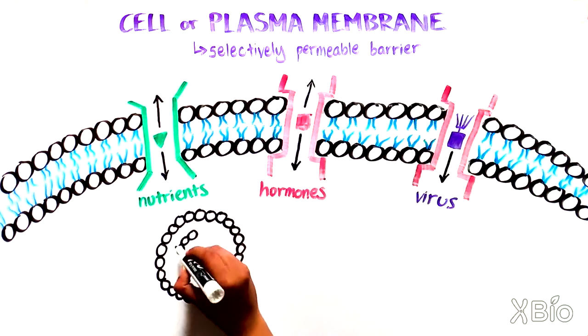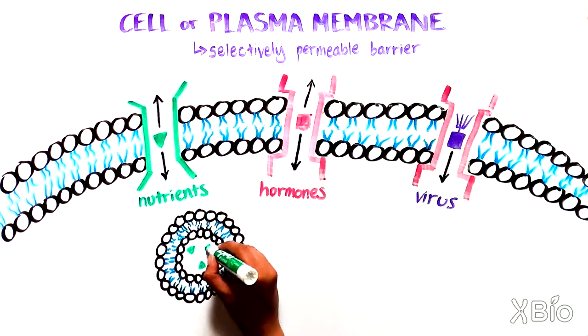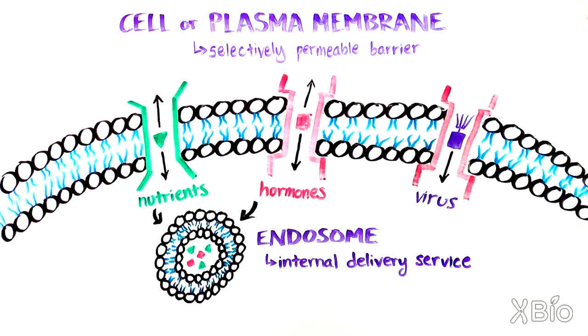Once the materials are through the plasma membrane, some end up in another membrane-bound organelle called an endosome, or an internal delivery service. The endosome can deliver the material to many other organelles that we will learn about soon.